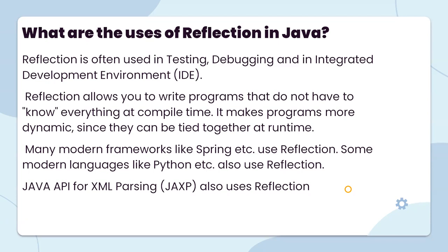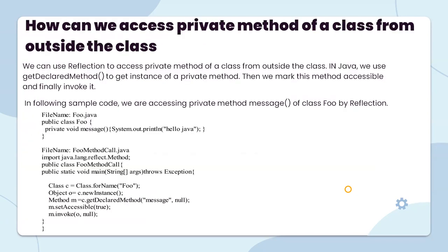Many frameworks like Spring and Struts use Reflection. Some modern languages like Python also use Reflection. Java APIs for XML processing and JAXB also use Reflection. How can we access a private method of a class from outside? We can use Reflection to access private methods. In Java, we use getDeclaredMethod to get an instance of the private method, then mark it accessible, and finally invoke it.